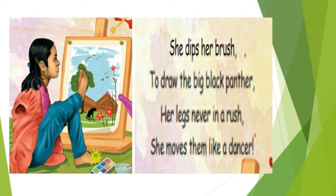Third stanza: 'She dips her brush to draw the big black panther, her legs never in a rush, she moves them like a dancer.' She dips her brush to draw a big black panther, her legs were not in a hurry, she did a gentle movement.